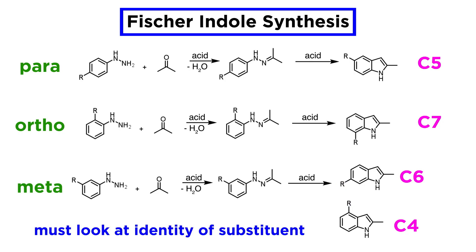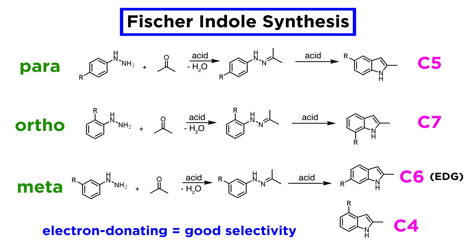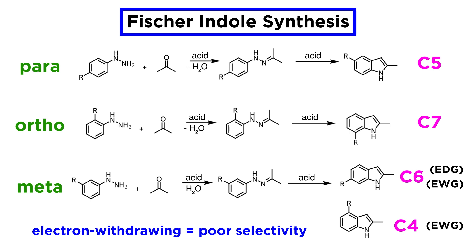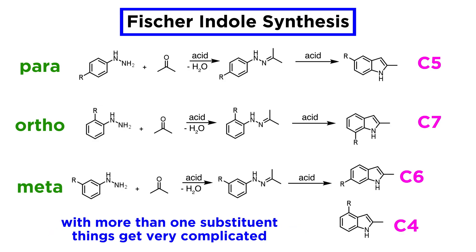Here we look at the specific substituent to know which will predominate. If R is electron-releasing, para-attack is usually favored, although not completely, and the major product is the one where R is at C6. If R is electron-withdrawing, selectivity is very poor and one can expect both C4 and C6 substitution, unless R is very bulky, in which case C6 substitution tends to prevail. Of course, with the presence of more than one substituent, the situation becomes highly complex.